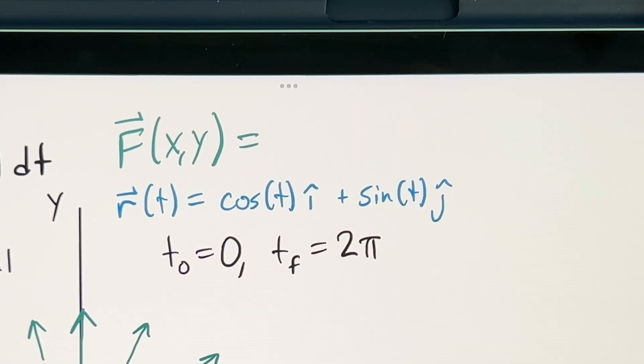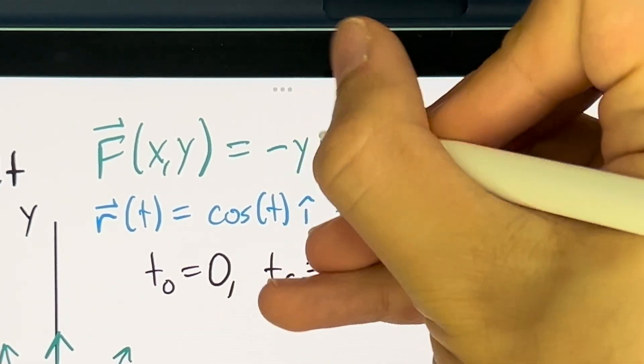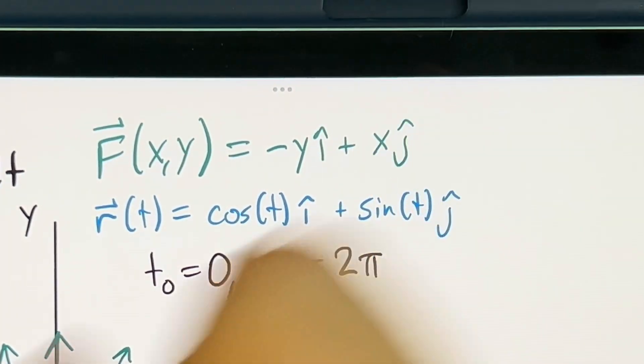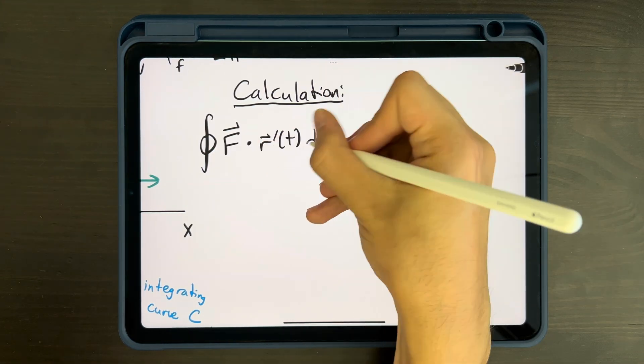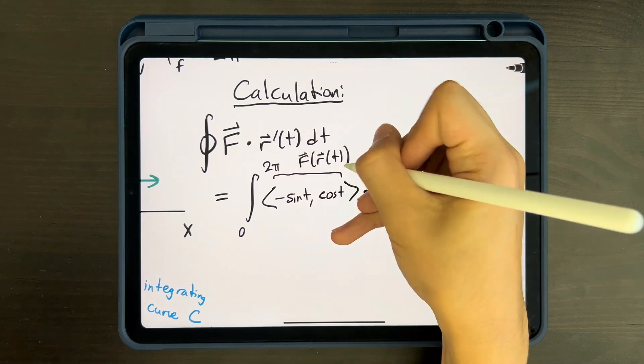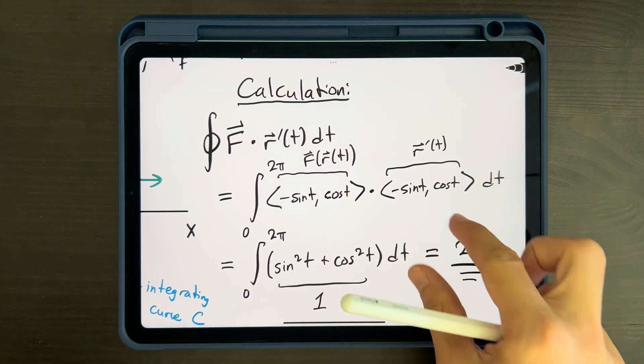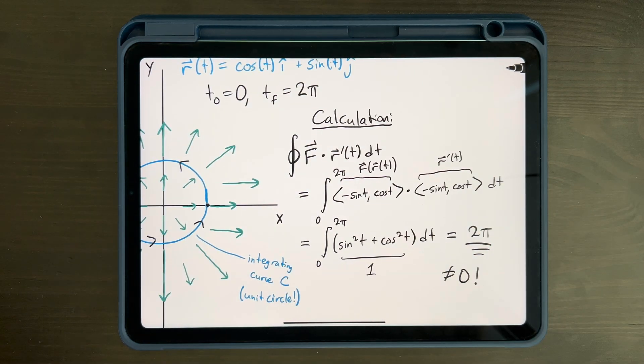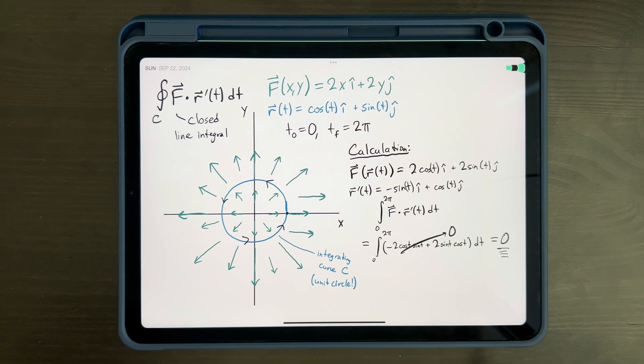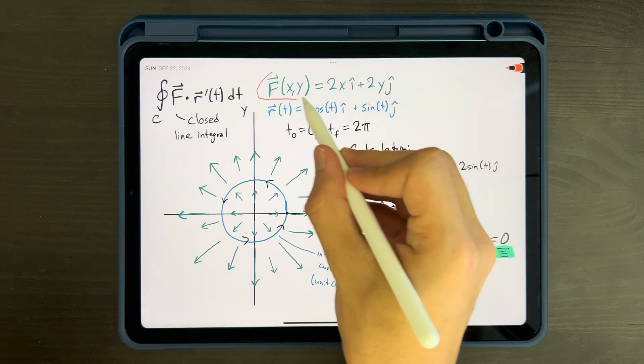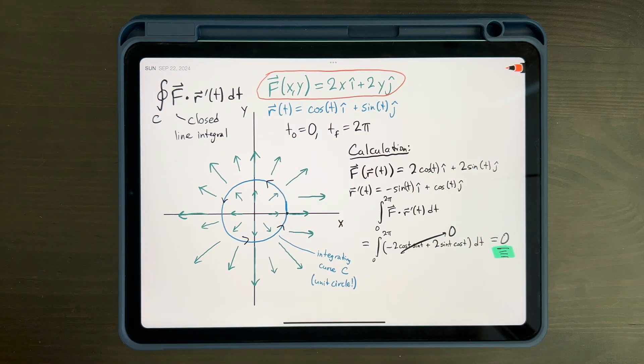As a counterexample, consider f of x comma y equals minus y i hat plus x j hat. If we take the line integral of this vector field over our same unit circle curve, we end up with a non-zero value. It turns out, the fact that the line integral of our first vector field ended up being 0 also has to do with the vector field that we chose. It's special.